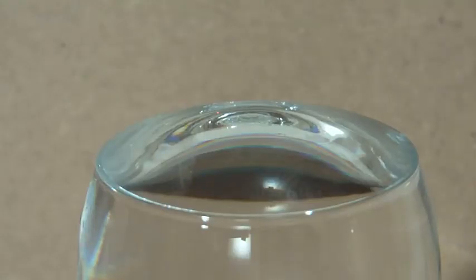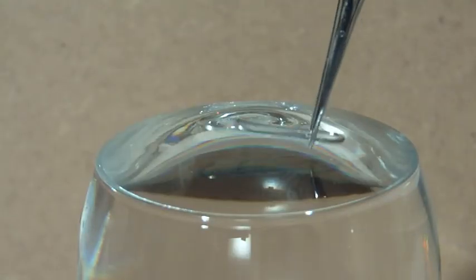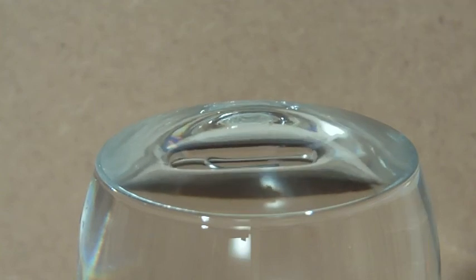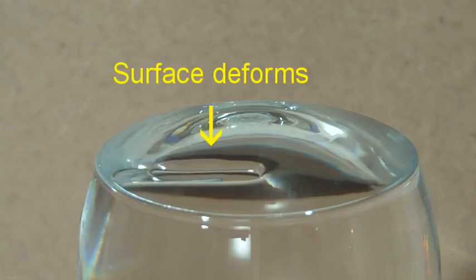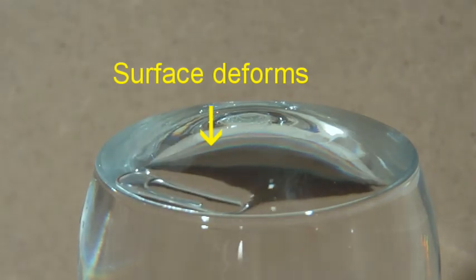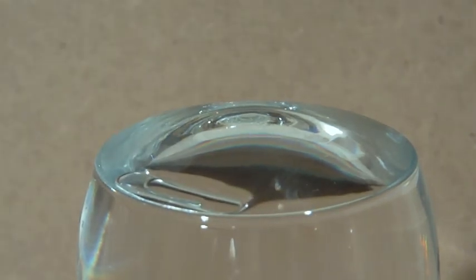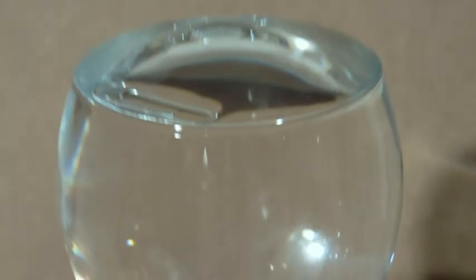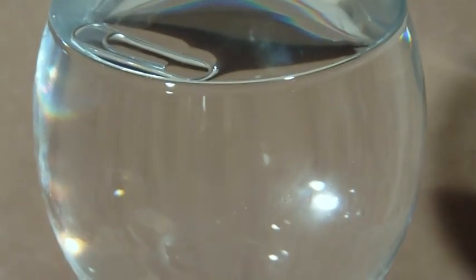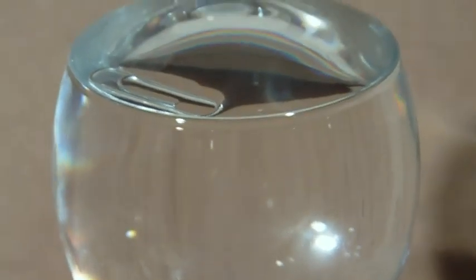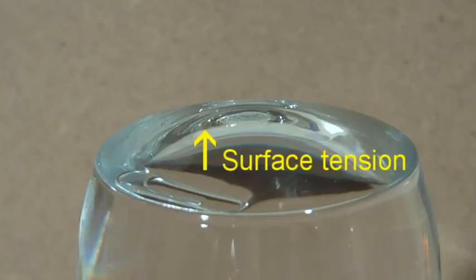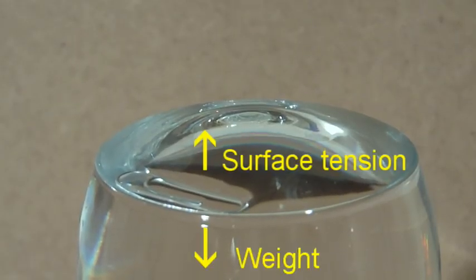You can, however, if you are very careful, make an iron paperclip float on water. As I gently lower this paperclip and position it on the surface of the water, you can notice that the surface actually deforms. An elastic-like force holds the surface of the water together. It's called the surface tension. The surface tension just balances the weight of the paperclip acting downwards.